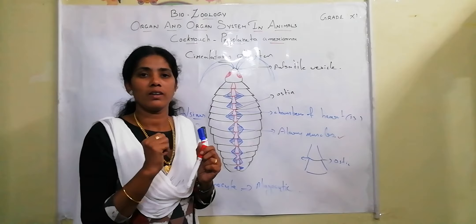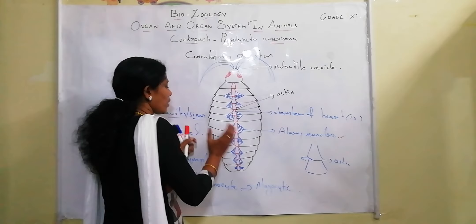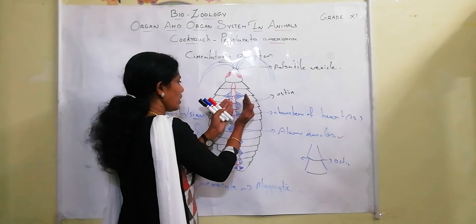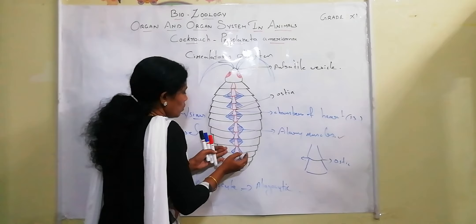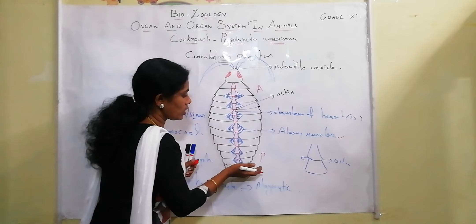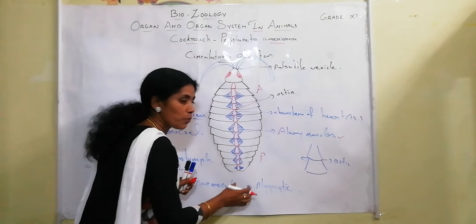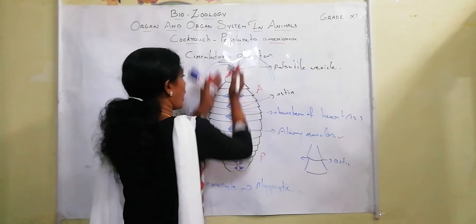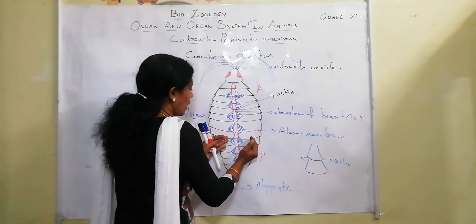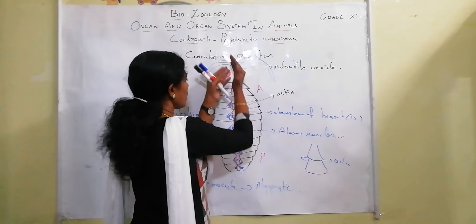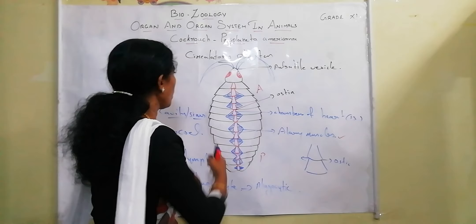When the ostia operate, blood moves from the sinus inside. The blood moves from posterior to anterior direction through the haemocoel — through the openings into the heart chambers, moving upward in posterior-to-anterior direction. That is all about the circulatory system.